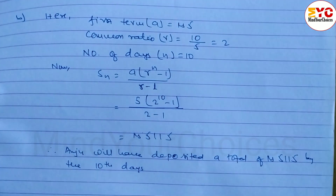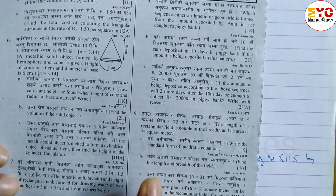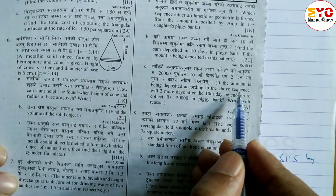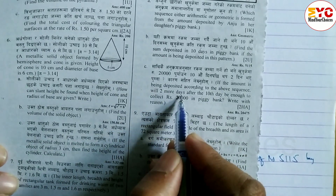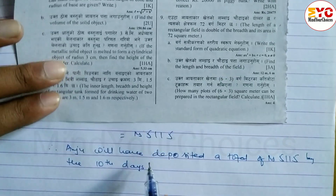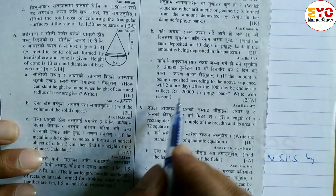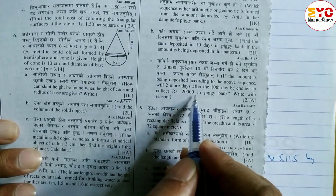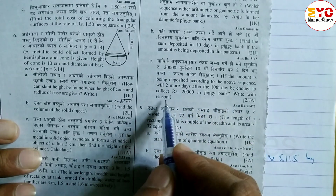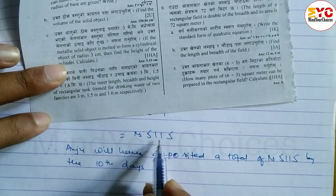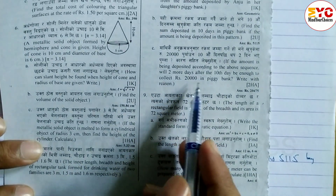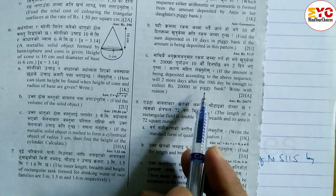Now look at question number C. If the amount is being deposited according to the above sequence, will 2 more days after the 10th day be enough to collect 20,000 in the piggy bank? Write your reason. After 10 days the total is 5,115. We need to check if 12 days total is enough.